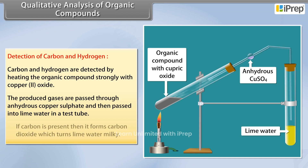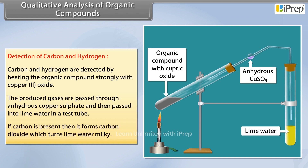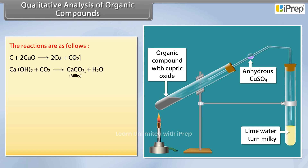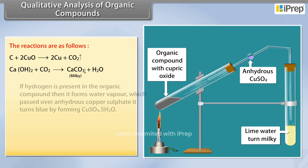In a test tube, if carbon is present, it forms carbon dioxide, which turns the lime water milky. The reactions are as follows: carbon in the organic compound reacts with copper(II) oxide and produces copper and carbon dioxide. The produced carbon dioxide reacts with calcium hydroxide, which turns it milky, indicating the presence of carbon in the organic compound.